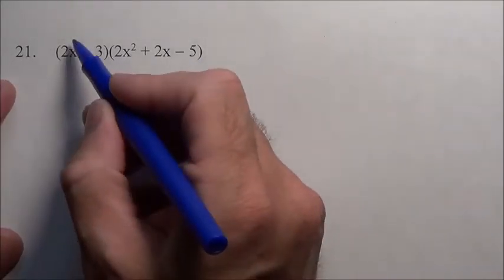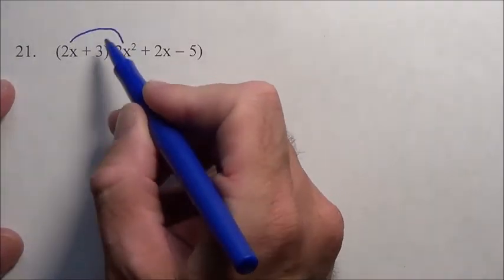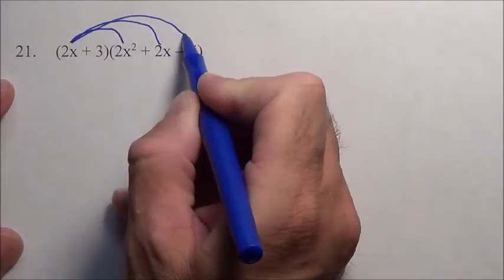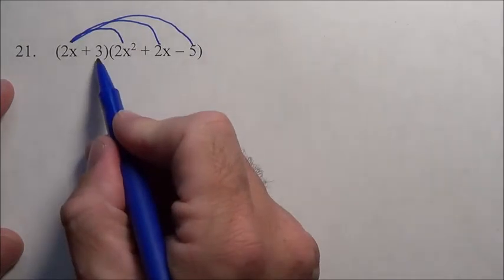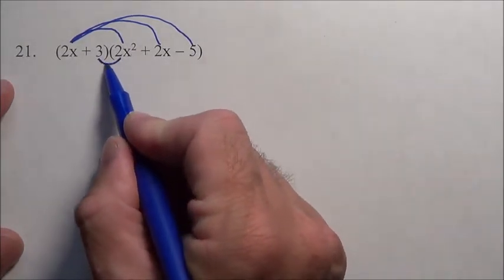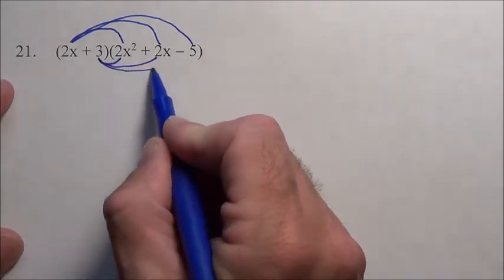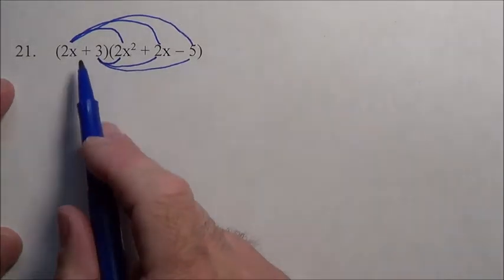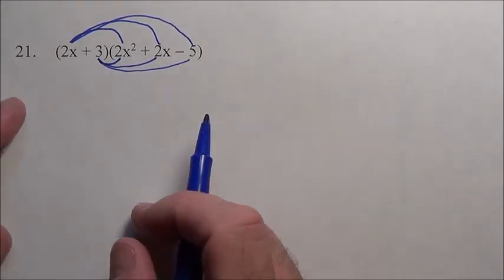So what's going to happen is I'm going to have to distribute the 2x through here and there and to the third piece. And then I'm going to have to take this 3, distribute it through to there, to the second piece and distribute it through to the third piece. So I'm going to end up with six total terms and then some of them will combine.